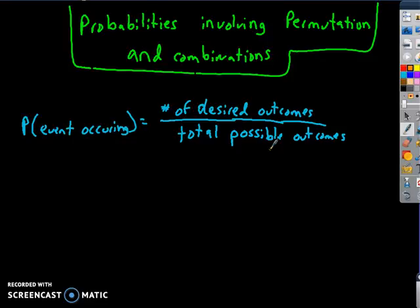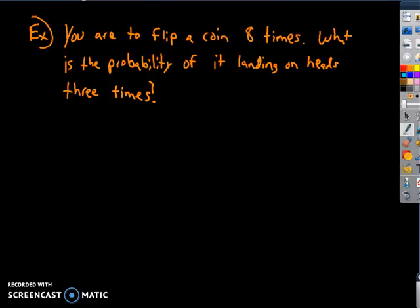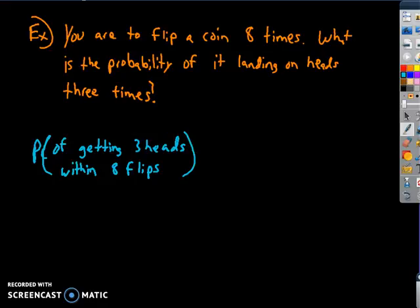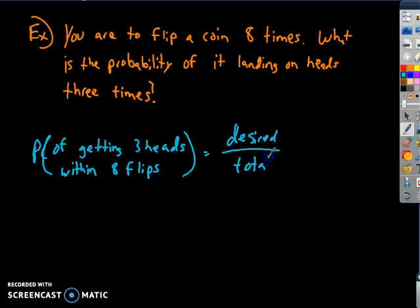Understanding that, let's look at this example. You've got to flip a coin eight times. What is the probability of it landing on heads three times? This is the probability of getting three heads out of eight flips — desired outcome over total possible outcomes. So I'm going to come up with total possible outcomes first.